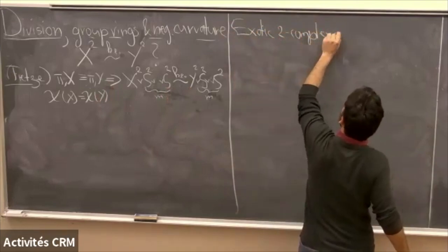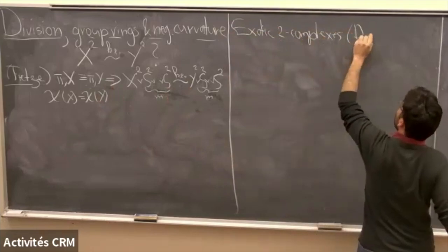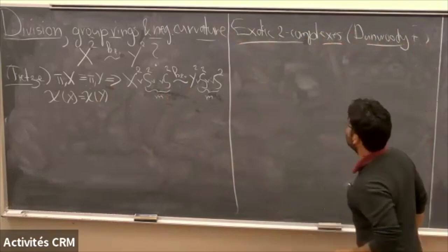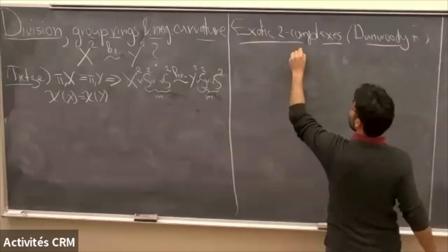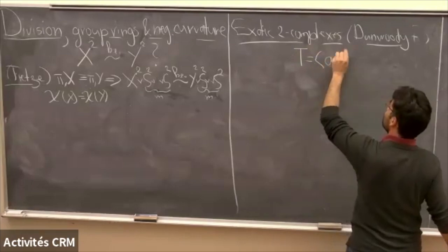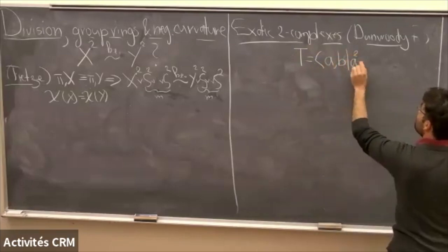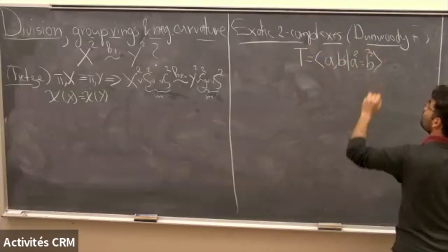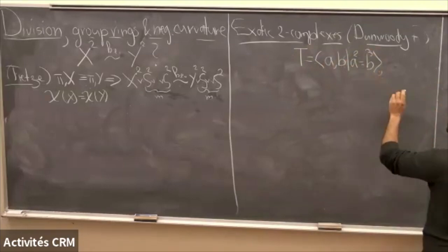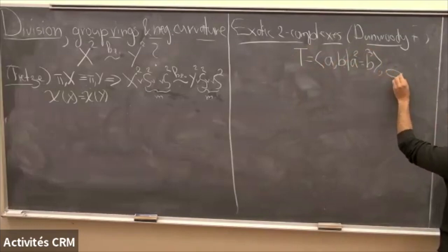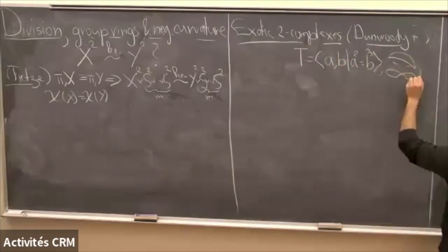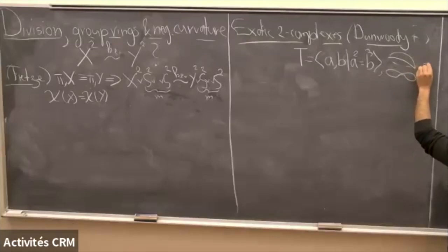I want to tell you about my favorite examples where you do need to do something — these are examples of exotic two-complexes. This goes back to Dunwoody and others. They have to do with the trefoil group: the fundamental group of the trefoil, a two-generator one-relator group with relation a² = b³. There's an obvious two-complex you can construct: take a circle and glue on a disk by the relation a²b⁻³. Call that complex K.